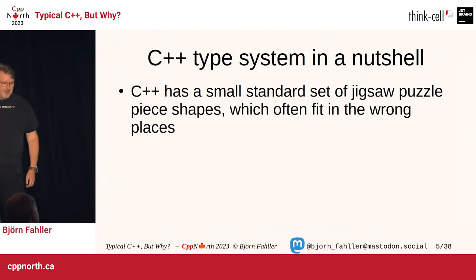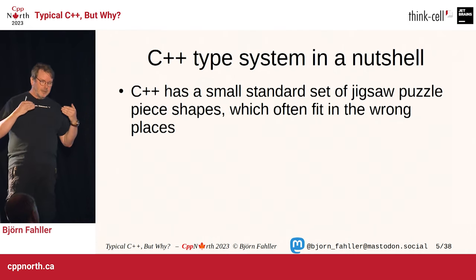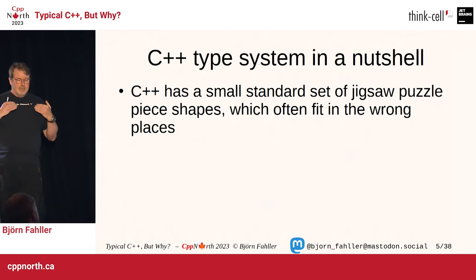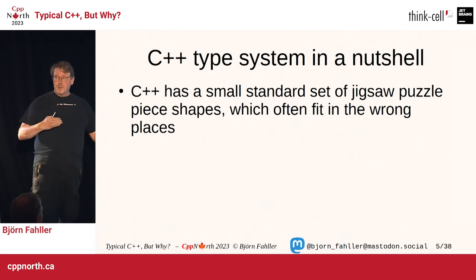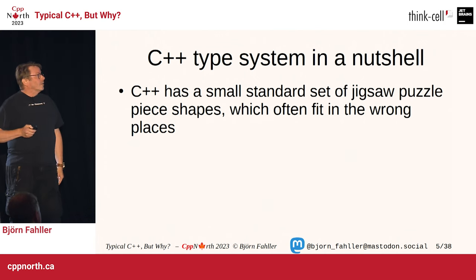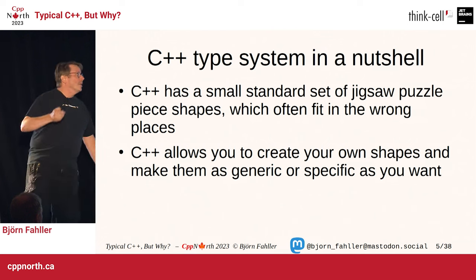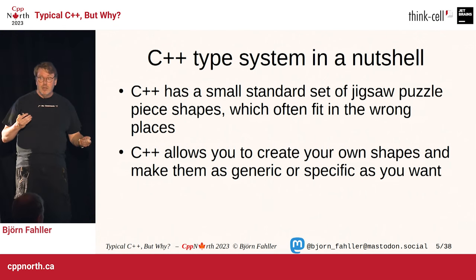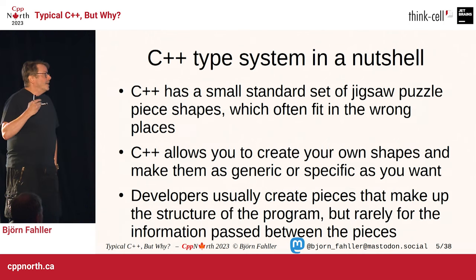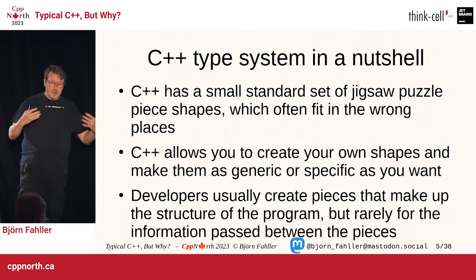The C++ type system has a small set of standard jigsaw puzzle piece shapes, like the integer types and the floating point types. And as we know, they promote to each other hither and thither whether you want it or not, which is not great. But at the same time, C++ allows you to create your own shapes, and you can make them as generic or as specific as you want. Developers usually create classes that make up the structure of the program.